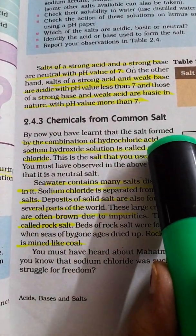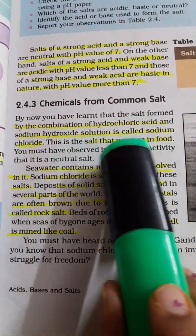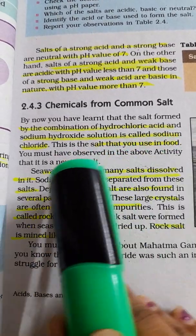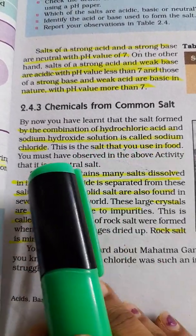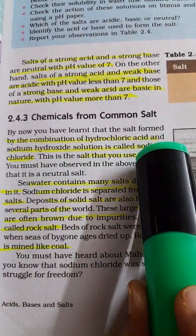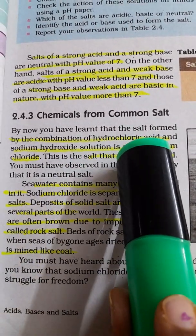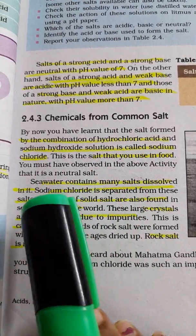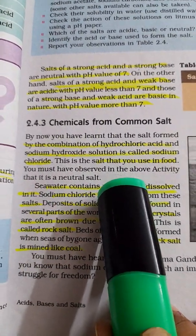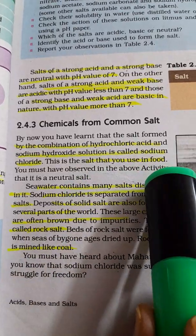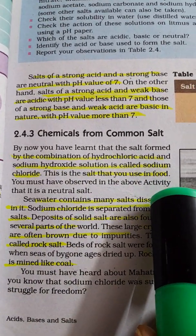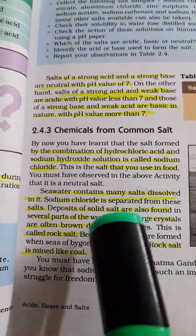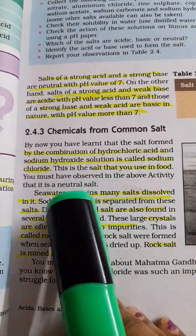We will learn about chemicals from common salt. Salts formed by combining HCl and sodium hydroxide solution is called sodium chloride. That is, when sodium hydroxide reacts with hydrochloric acid, you get sodium chloride. Sodium chloride is a very common name — in every household you have it. That is what you use in food — the salt you use when you prepare your food.